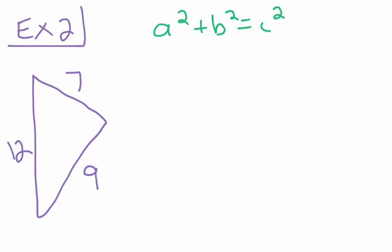We have to remember the 12 needs to get substituted in for C. C always has to be the longest side. So we substitute 12 in for C. So that means we have 7 squared plus 9 squared is equal to 12 squared.